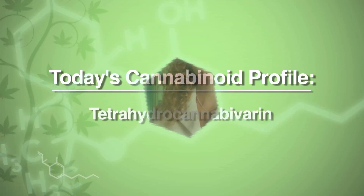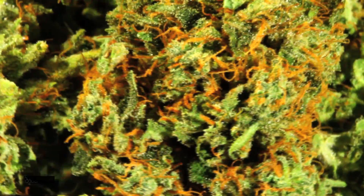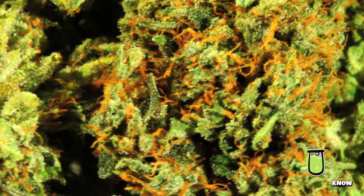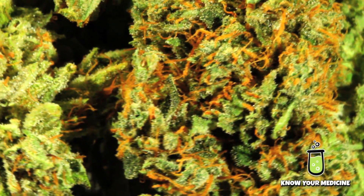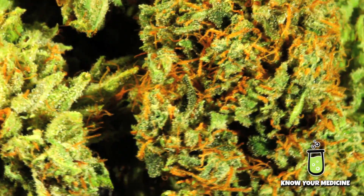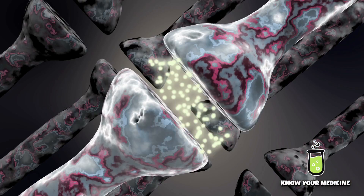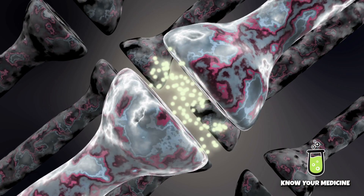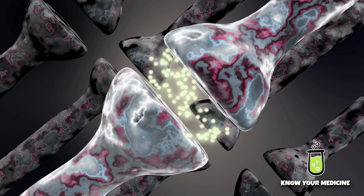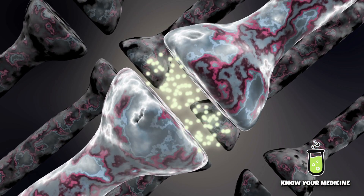THCV, or tetrahydrocannabivarin, is another cannabinoid found in the cannabis plant, and it appears to have an interesting reaction with the CB1 receptor. At low doses it blocks the receptor, and at higher doses it binds to the receptor.